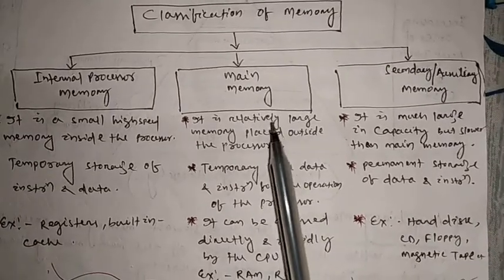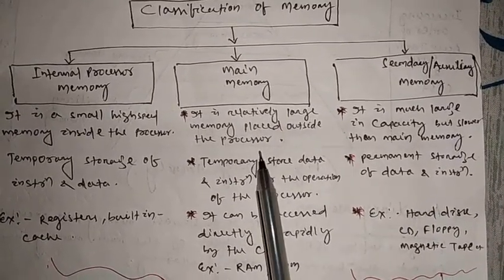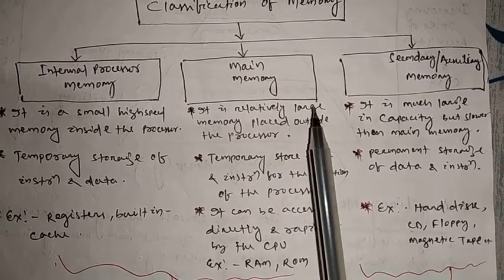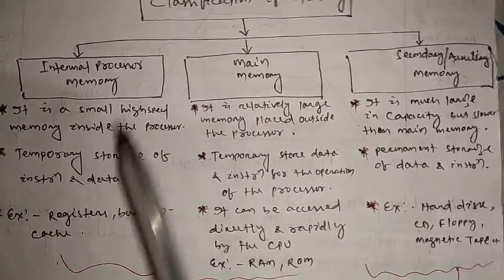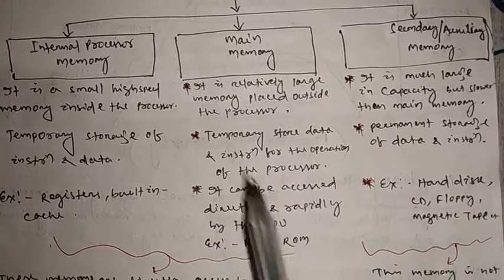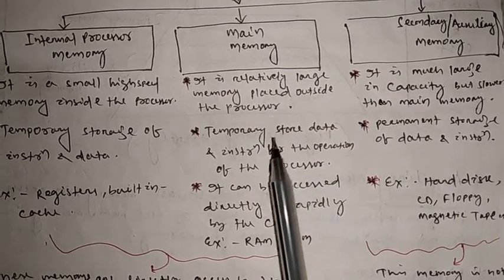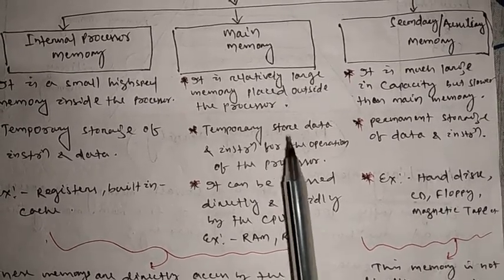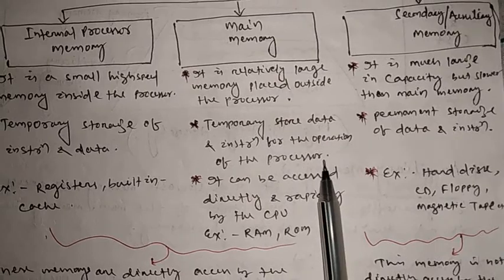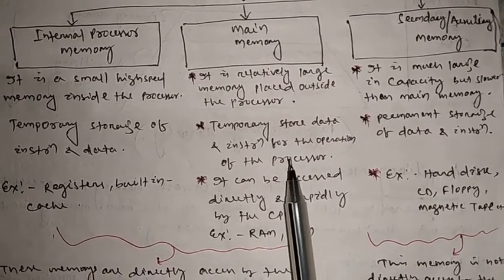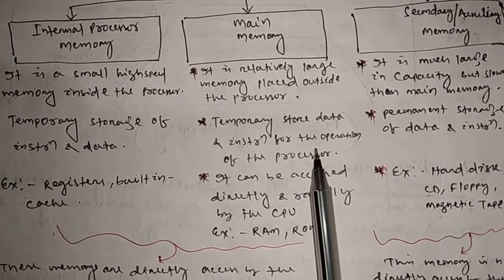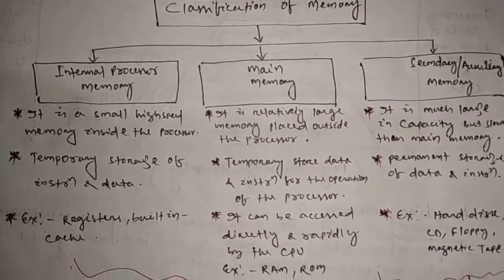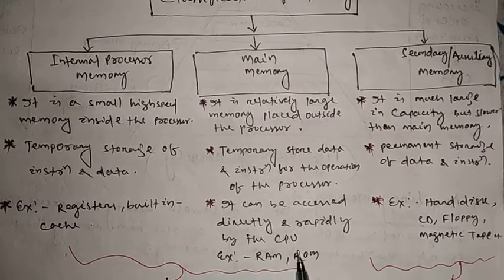Next, main memory. Main memory is a relatively large memory placed outside the processor. It is relatively larger than internal processor memory — larger than cache memory and register memory. Main memory also stores data and instructions temporarily for the operation of the processor. Whenever the processor wants to execute any information, it stores the information in main memory on a temporary basis. It can be accessed directly and rapidly by the CPU. The examples of main memory are RAM and ROM.